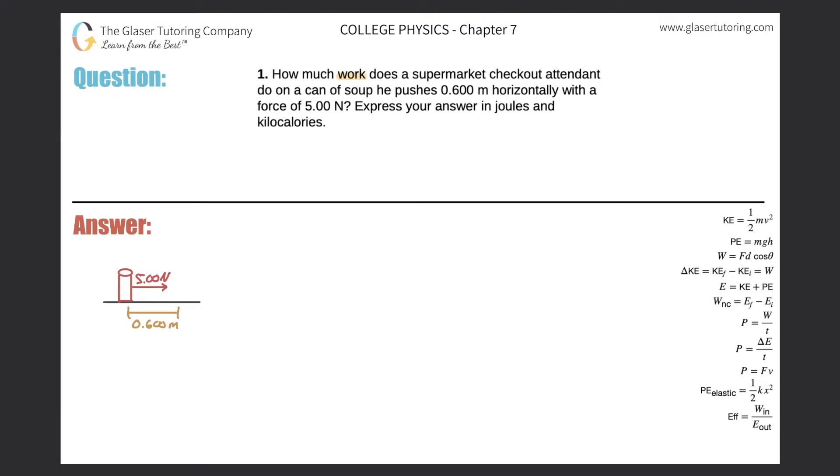Number one, how much work does a supermarket checkout attendant do on a can of soup he pushes 0.6 meters horizontally with a force of five newtons? Express your answer in joules and kilocalories.